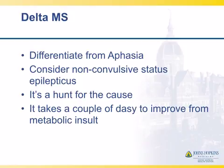In summary, when you see patients you really want to make sure there isn't an aphasia — that can be very difficult. Do consider non-convulsive status, especially in people who have a history of seizures. If someone comes in with a seizure and a known seizure disorder and has a really prolonged post-ictal confusional state, think about non-convulsive status epilepticus. Often it's a hunt for the cause — we'll come and say no focality, metabolic encephalopathy, you just have to find the cause. It often takes a couple of days to improve from a metabolic insult — acute renal failure, acute hepatic failure, hypoglycemia, hyperglycemia, sodium or calcium abnormalities — the day the correction occurs is not going to be the day they improve.